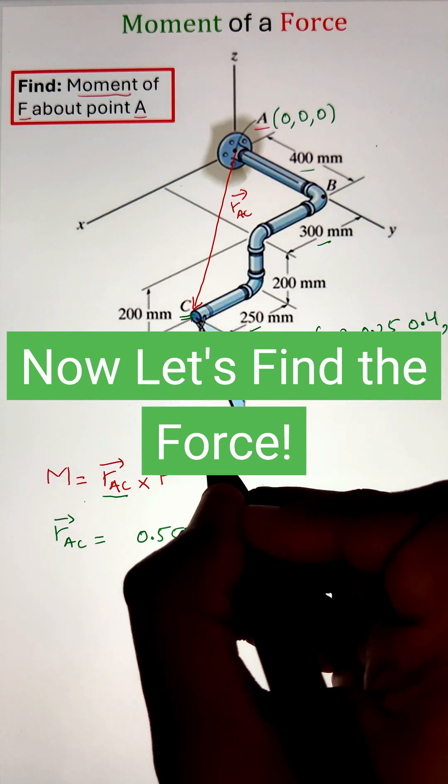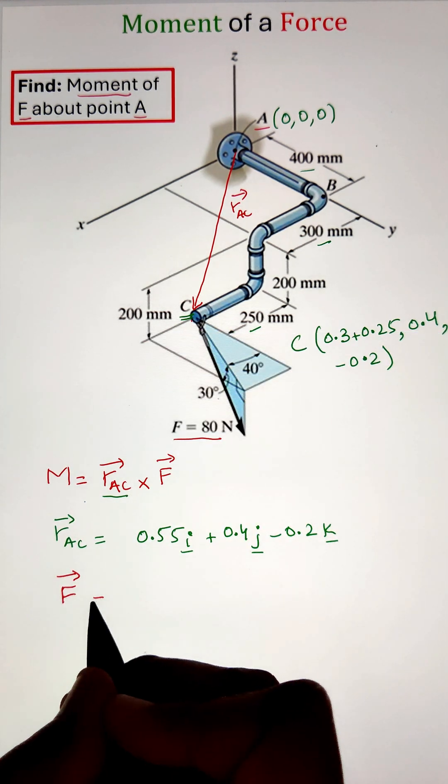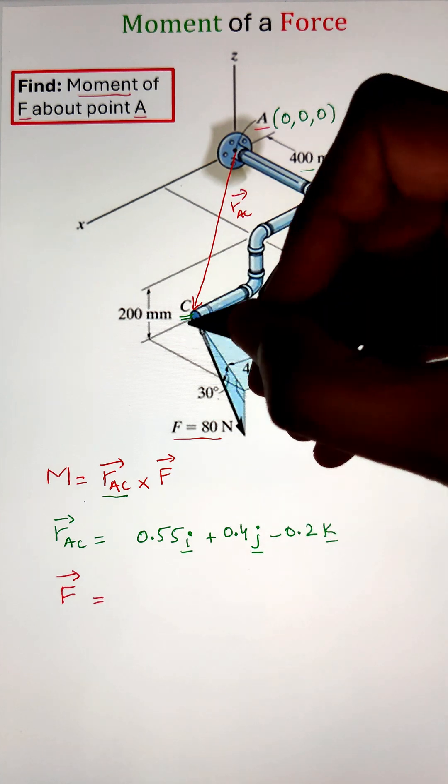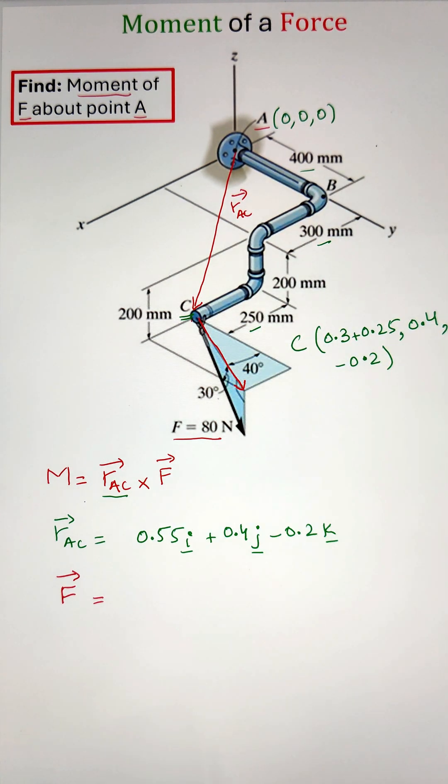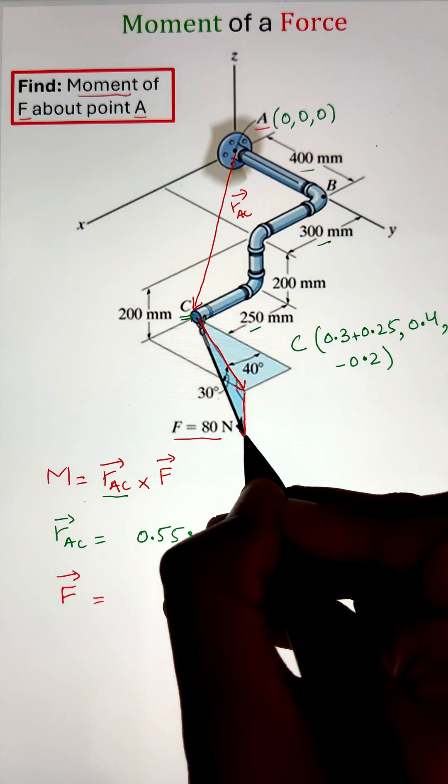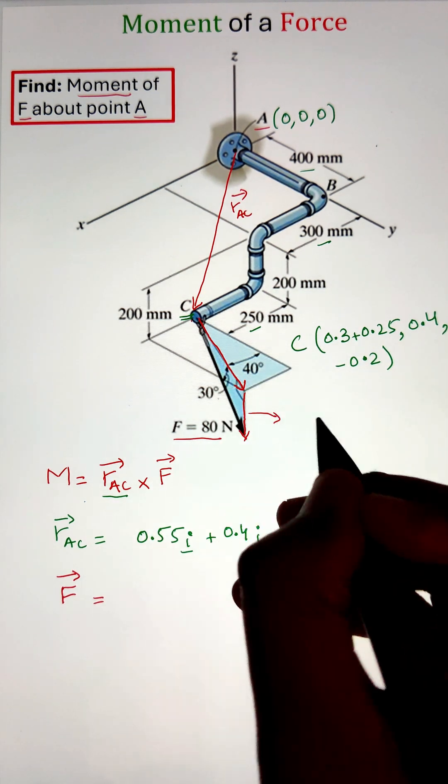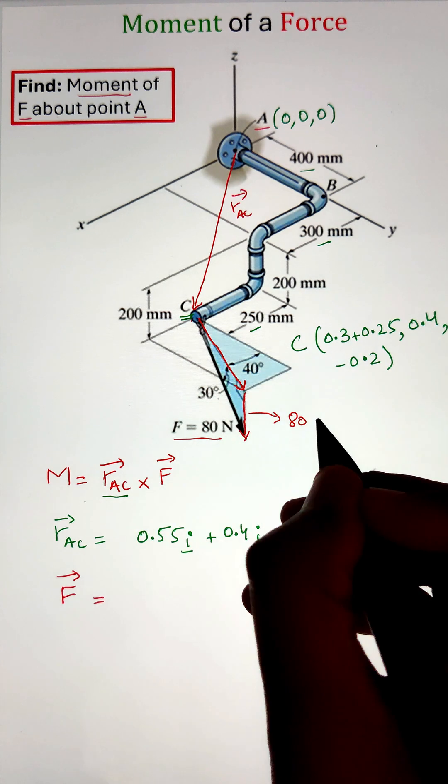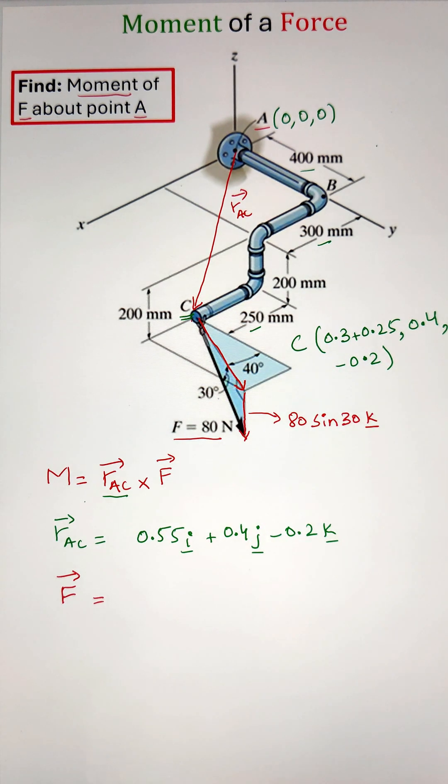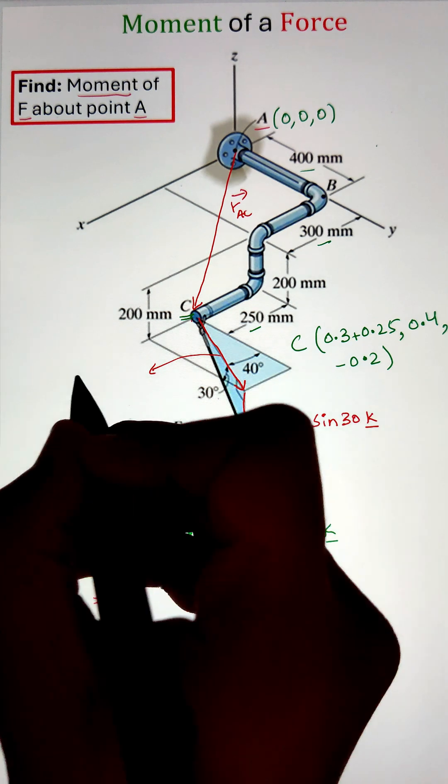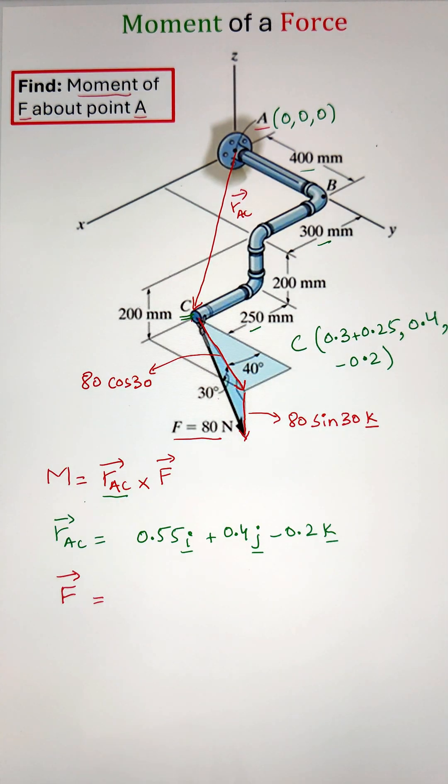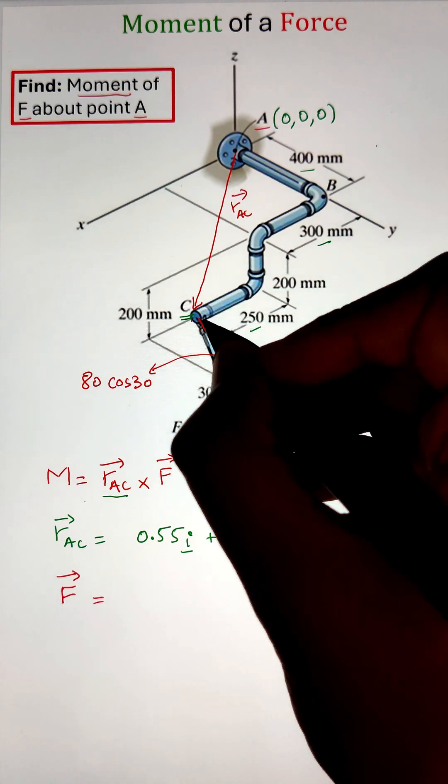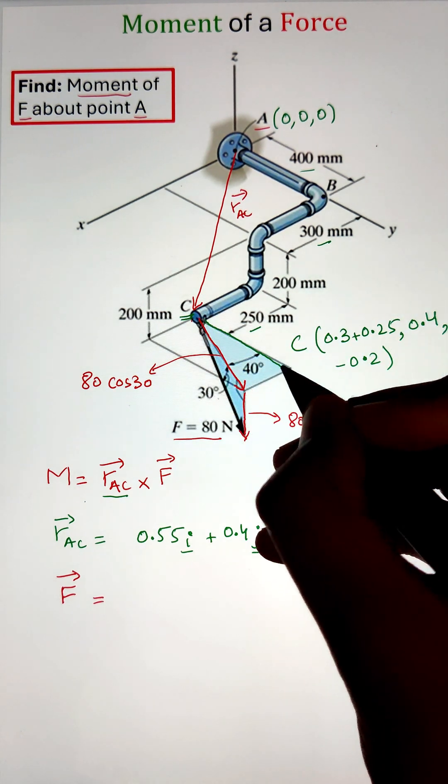Next, we need to write the force vector in Cartesian vector notation by resolving it along the x, y, and z axis. First, we will consider the right angle triangle with an angle of 30 degrees and resolve the 80 newton force vector along the other two sides of the triangle by taking the sine and cosine of 30 degrees. This gives us a component of the force along the negative z axis and a component in the x, y plane.